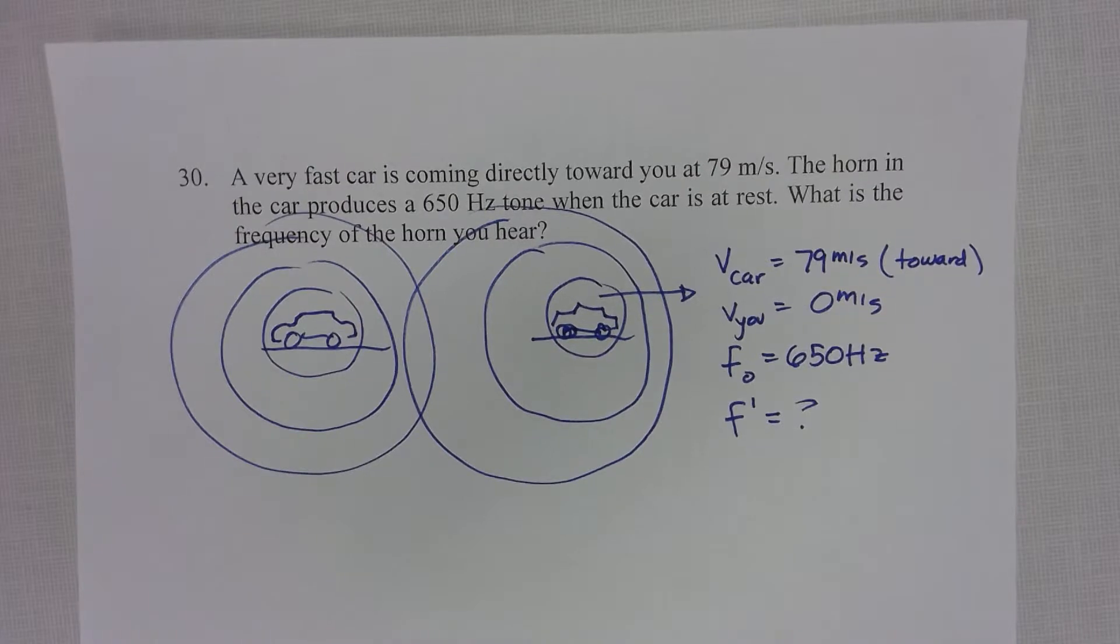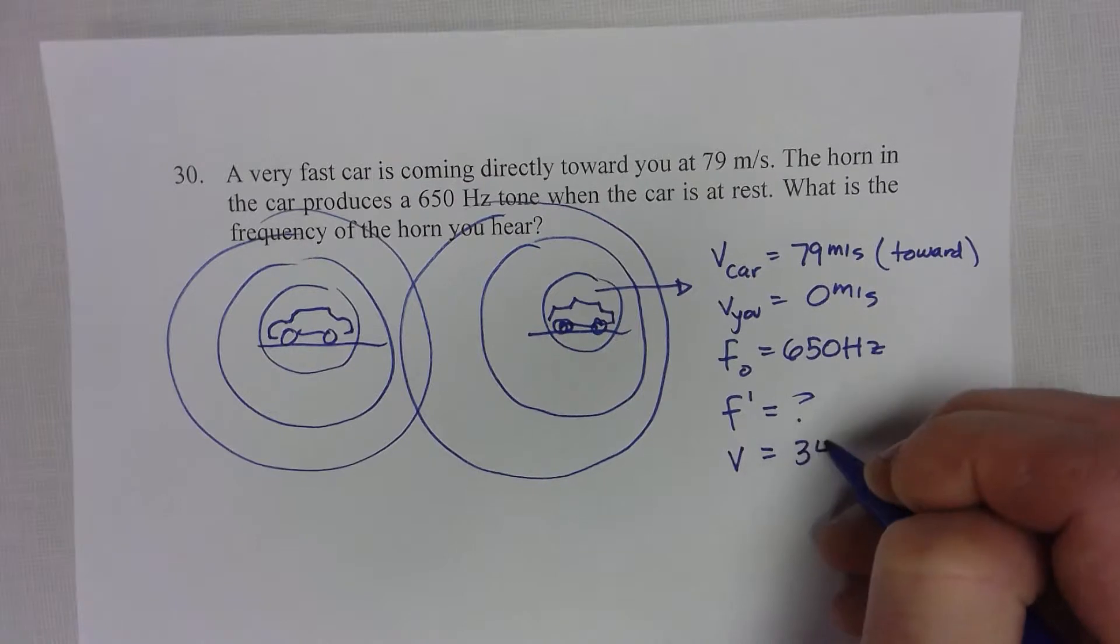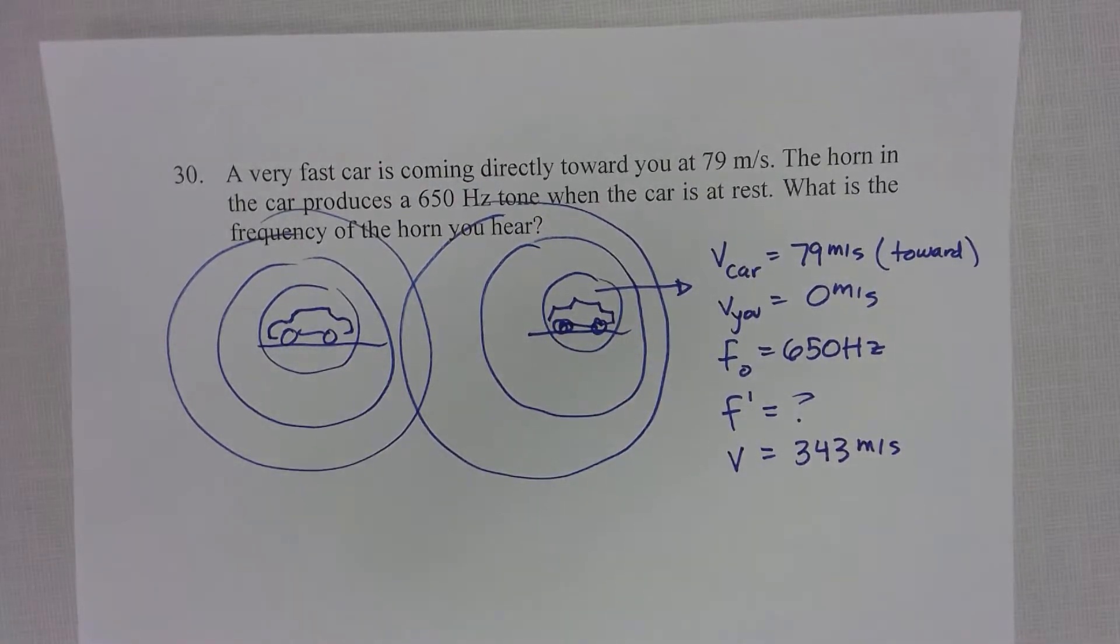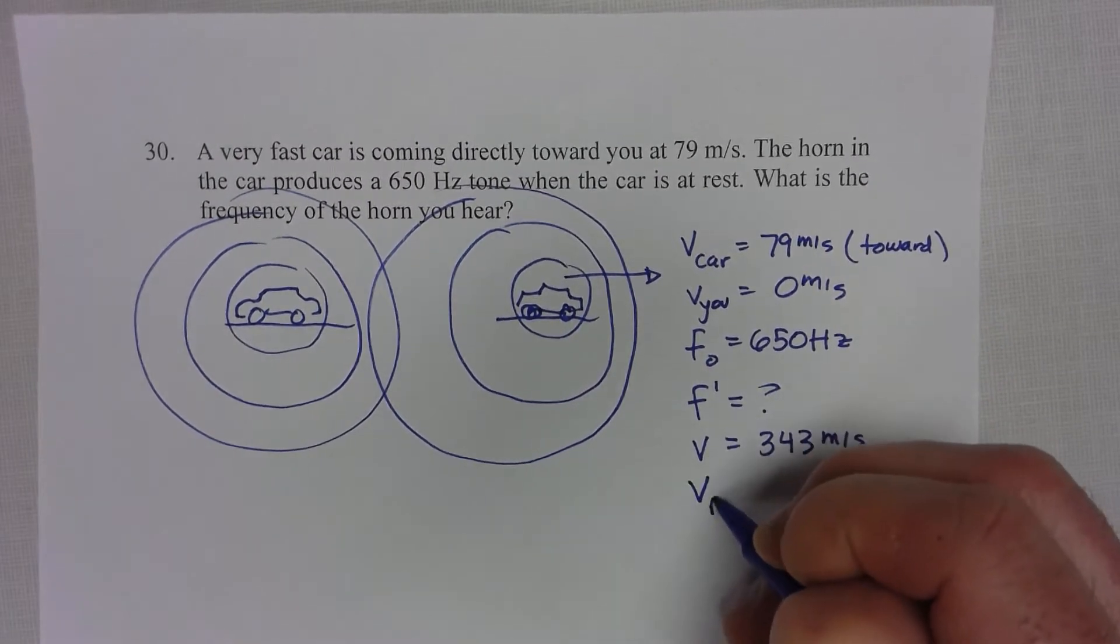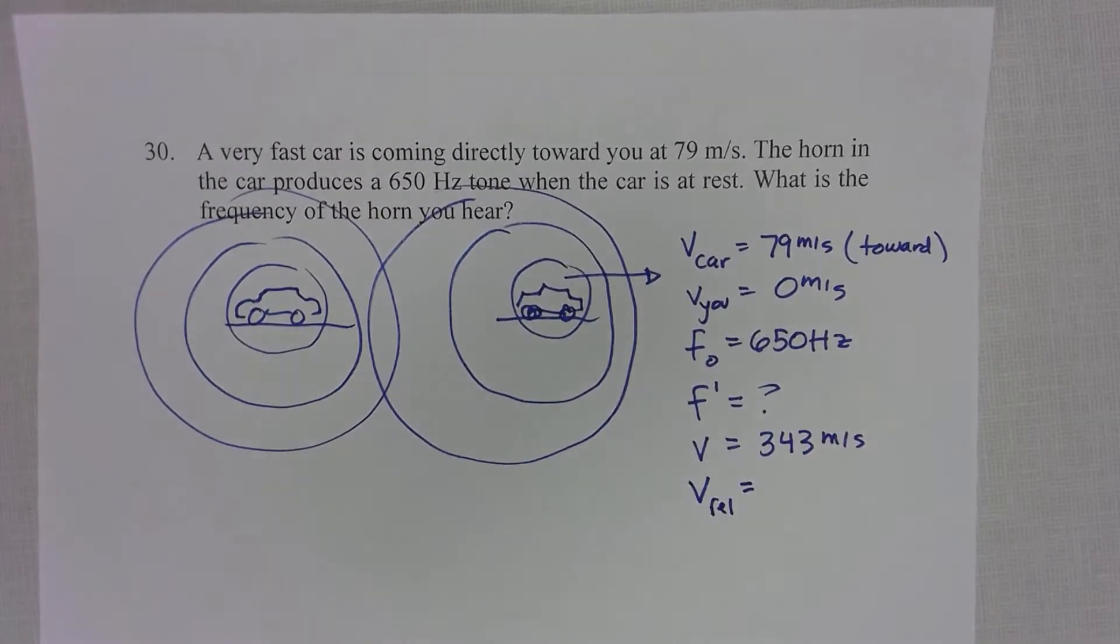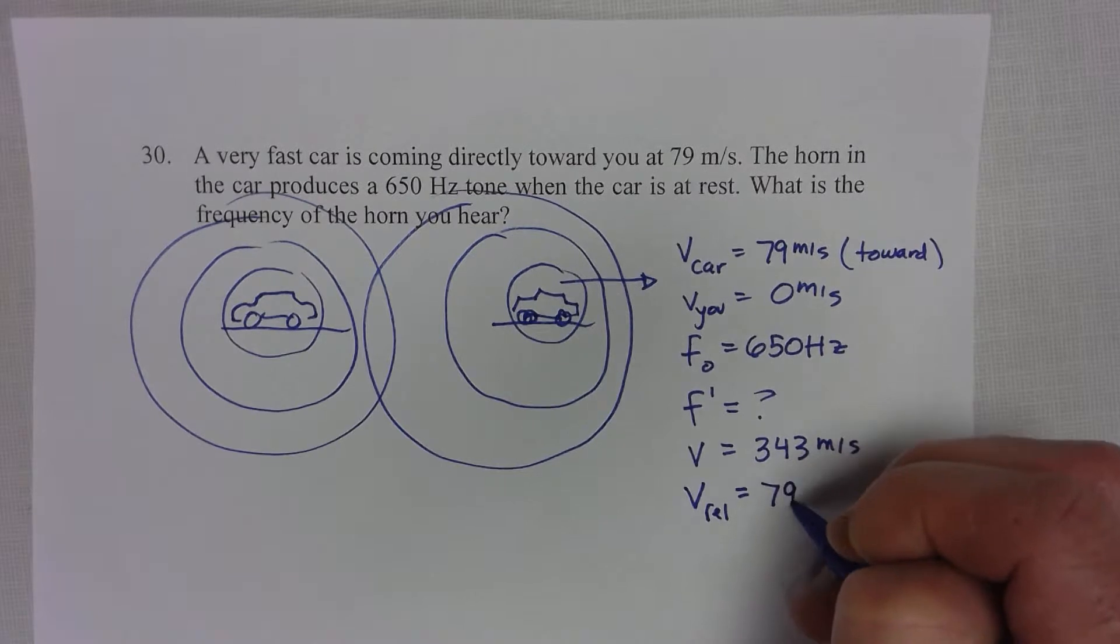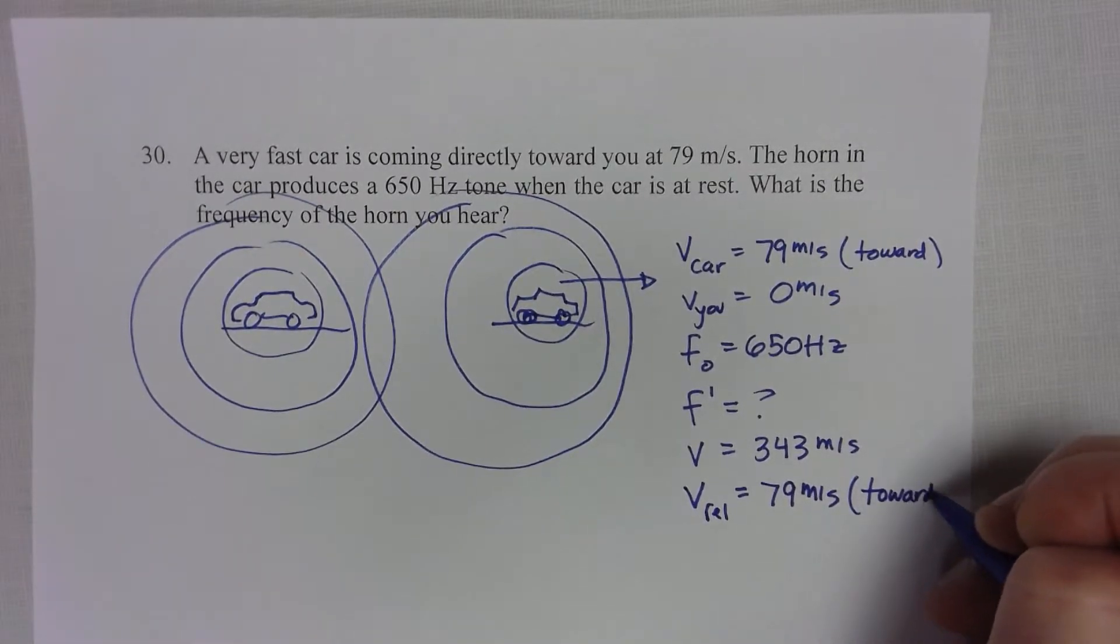One important thing to know here is that the wave we're studying is sound, and so we're going to use the speed of sound when we solve this problem. The last thing we've got to think about is what is the relative speed of the car and you relative to each other. Since you're not moving, the relative speed is really just the same as the speed of the car, so it's 79 meters per second toward you.